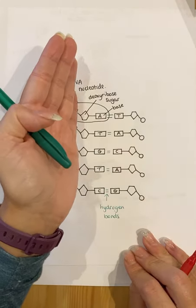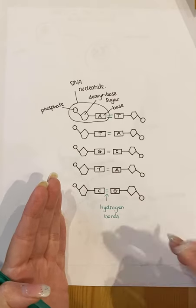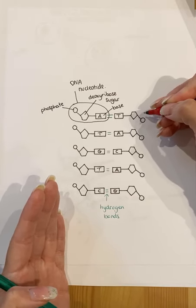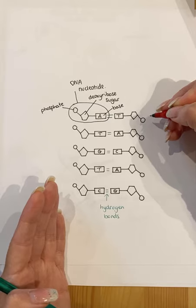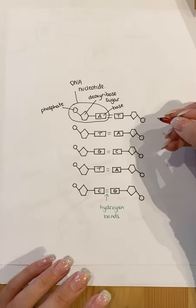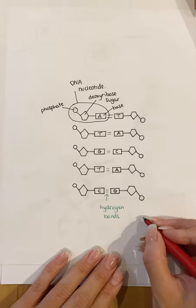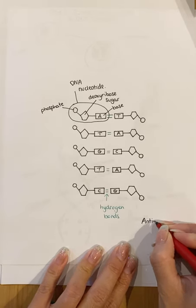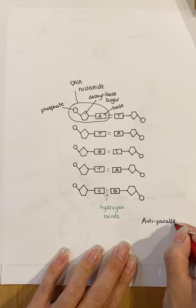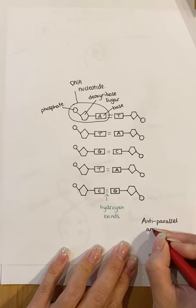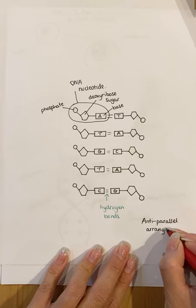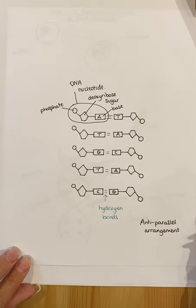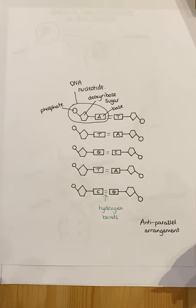We have one strand of DNA going down the left hand side and one strand on the right. You'll notice that they're pointing a different way, because this DNA molecule and all DNA molecules are arranged as an anti-parallel arrangement. What that means is that they are equally distant apart, but they run in opposite directions.